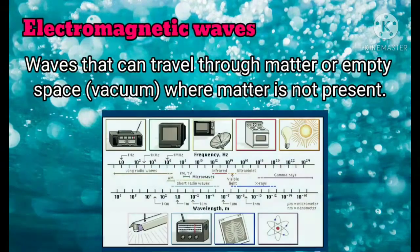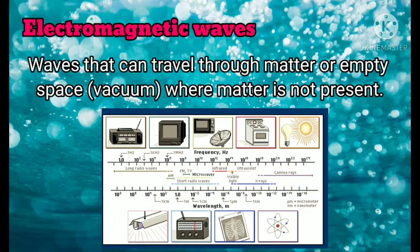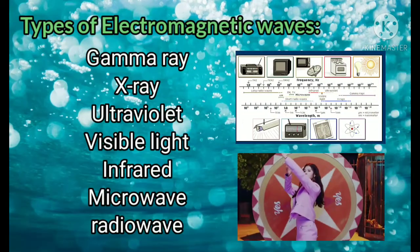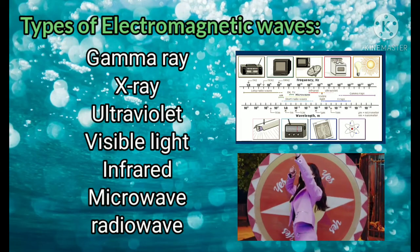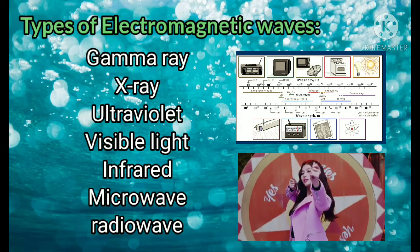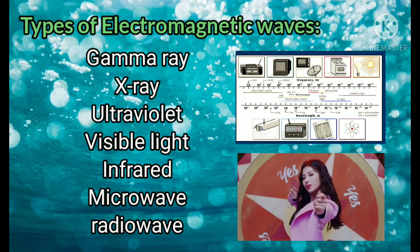Electromagnetic waves are waves that can travel through matter or empty space where matter is not present. Here are some types of electromagnetic waves: Gamma ray, x-ray, ultraviolet, visible light, infrared, microwave, and radio wave.